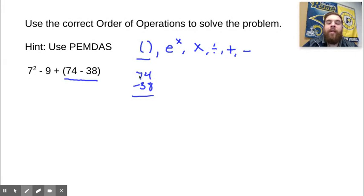We cannot do 4 minus 8, so we borrow from the 7, make that a 6, turn the 4 into 14. Fourteen minus 8 is 6, 6 minus 3 is 3. So that would be 36. I'm going to rewrite everything else I have not yet done. The next thing I need to look for is exponents, and we have exponents right here. Seven squared is the same thing as saying 7 times 7, which equals 49.